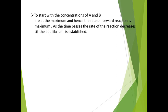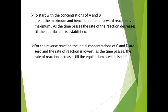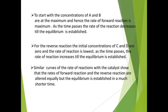For the reverse reaction, initial concentrations of C and D are zero, so the rate is low initially; as time passes, the rate increases until equilibrium is reached. With the catalyst, the rate of forward and reverse reactions are altered equally, but equilibrium is established in a much shorter time. With catalyst, equilibrium is reached at the same point but much sooner.